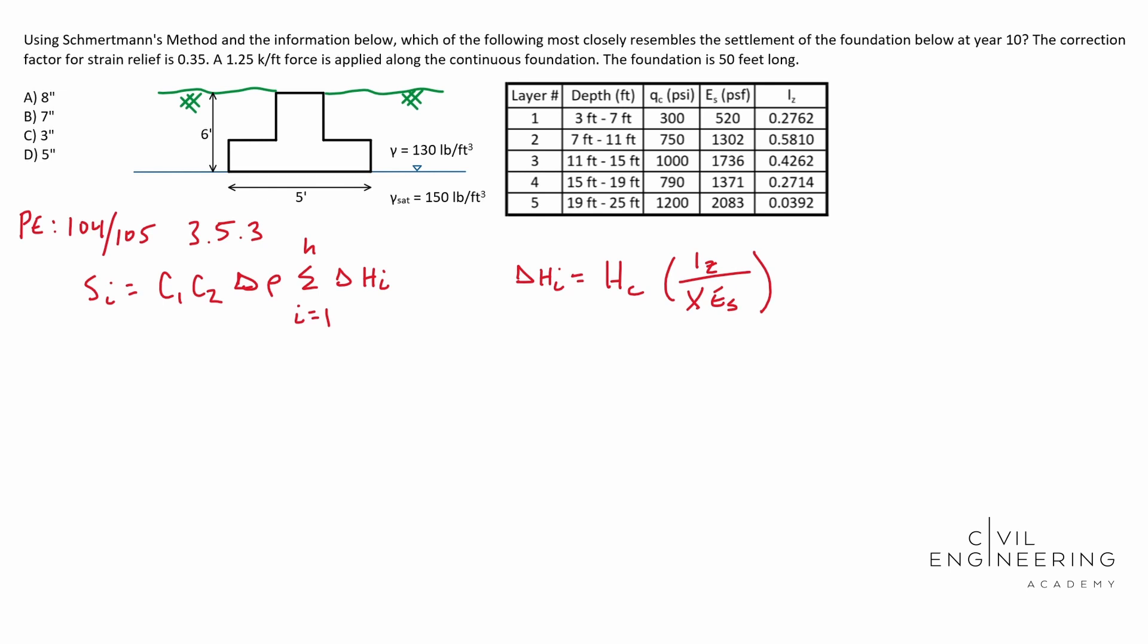You need to know your units in this problem. C1 is your strain relief. C2 is your creep factor. P is your pressure. H_c is your layer thickness. So that's how we see our depth there available to us in that table. That's going to be our H_c for each layer. I_z is your strain influence factor. That's given to us, our elastic modulus. That is also given to us, our shape factor.